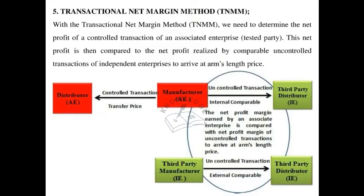The next method is the Transactional Net Margin method. In this method, we determine the net profit of a controlled transaction of an associated enterprise. This net profit is then compared to the net profit realized by comparable uncontrolled transactions of an independent enterprise to arrive at the arm length price.